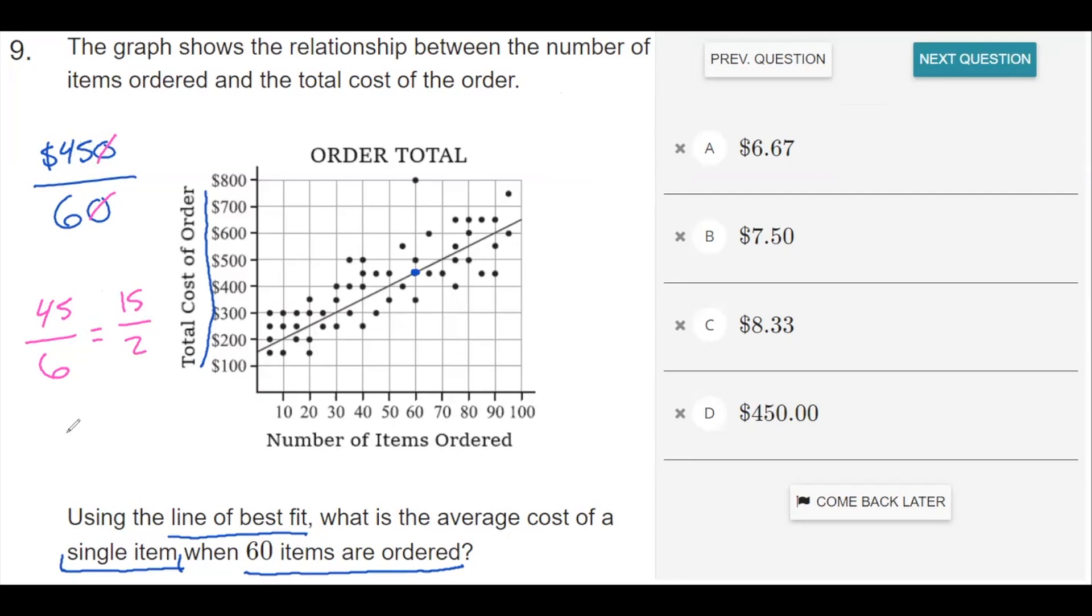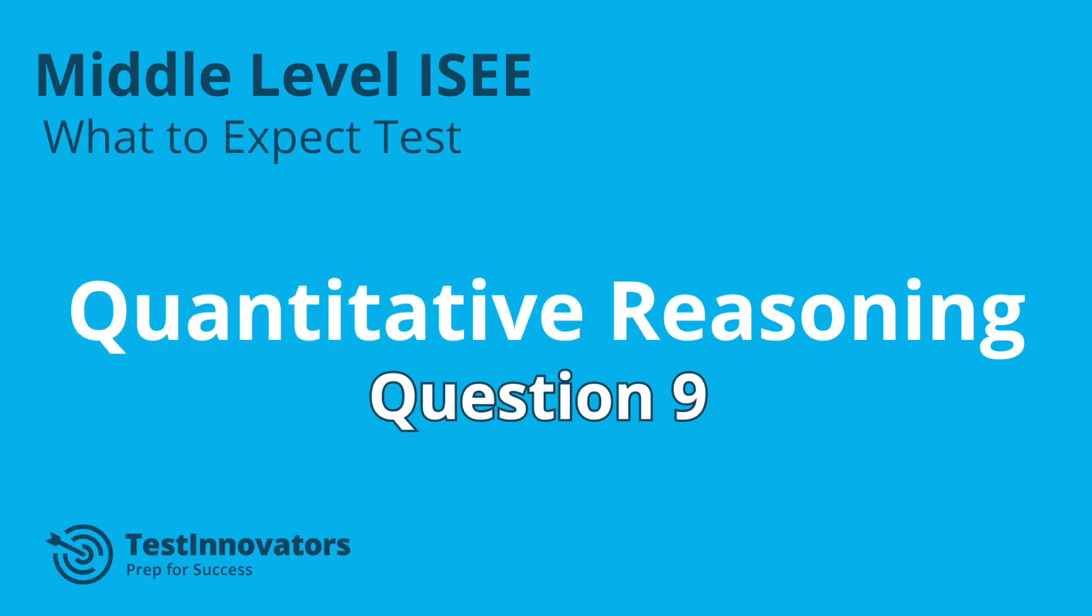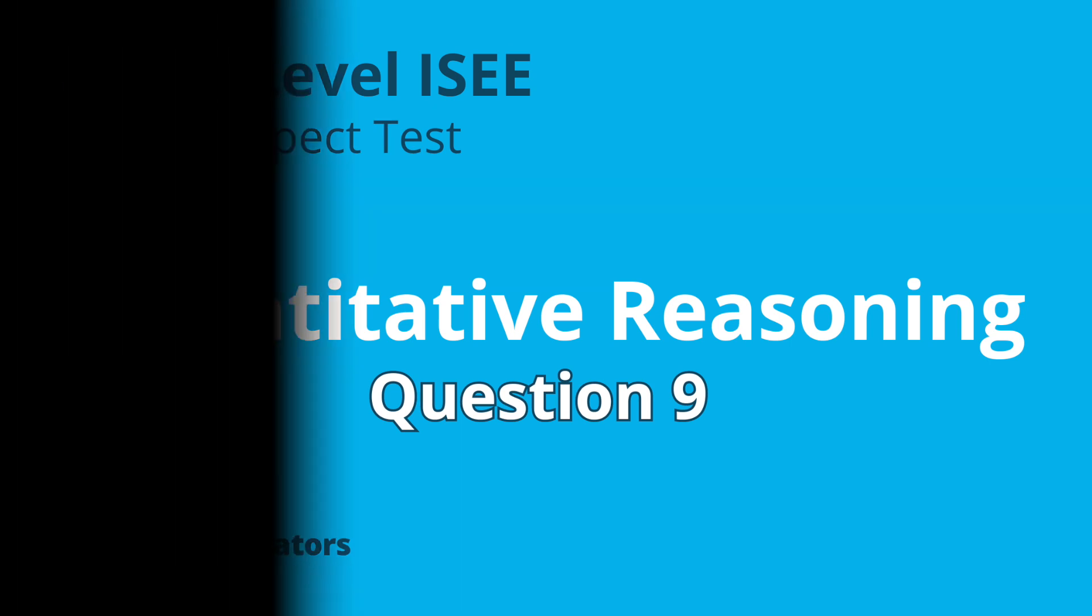And half of 15 is 7.5, which means each individual single item would be $7.50.